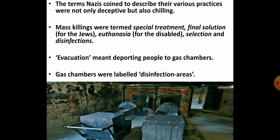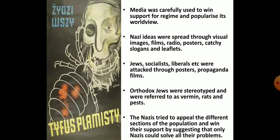The Nazis used language and terms very carefully. The terms they used to describe their practices were not only deceptive but also chilling. In their official communications, mass killings were termed 'special treatment' or 'final solution' for the Jews. Euthanasia was used for disabled, along with 'selection' and 'disinfection.' Evacuation meant deporting people to gas chambers, and gas chambers were labelled as 'disinfection areas.' These gas chambers looked like bathrooms equipped with fake shower heads. Nazis used media to win support and popularise their ideology, using visual images, films, radio, posters, catchy slogans and leaflets to spread their ideas.